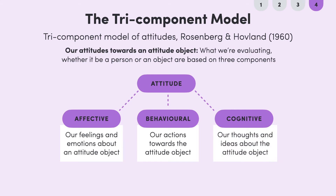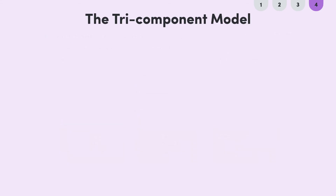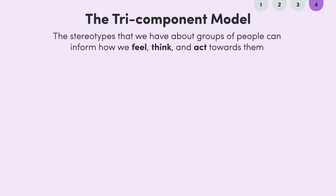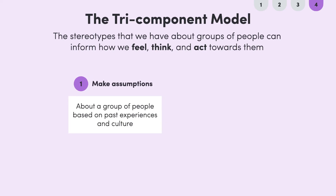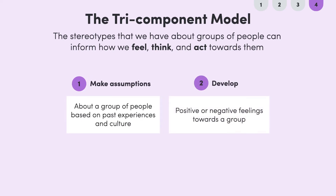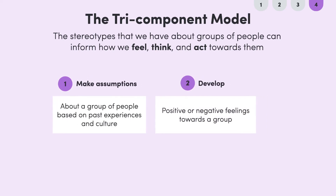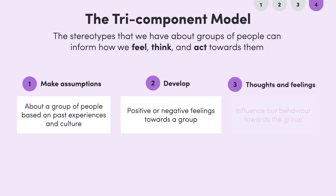So how do stereotypes fit into this model? The stereotypes that we have about groups of people can inform how we feel, think, and act towards them. At first we make assumptions about a group of people based on past experience and what we've learned in our culture. We then develop positive or negative feelings towards a group. Finally, our thoughts and feelings influence our behavior towards the group.